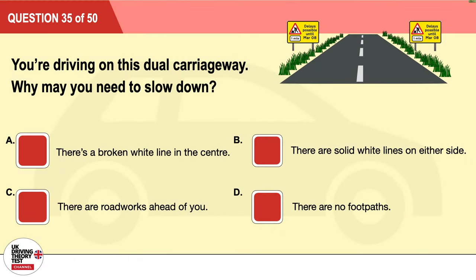Question 35: You're driving on this dual carriageway. Why may you need to slow down? A: There's a broken white line in the center. B: There are solid white lines on either side. C: There are roadworks ahead of you. D: There are no footpaths. The correct answer is C: there are roadworks ahead of you.